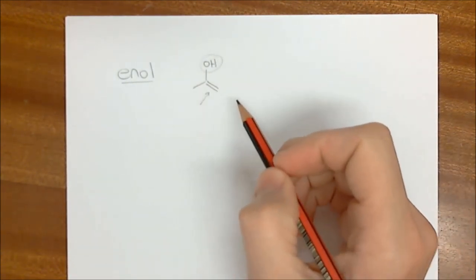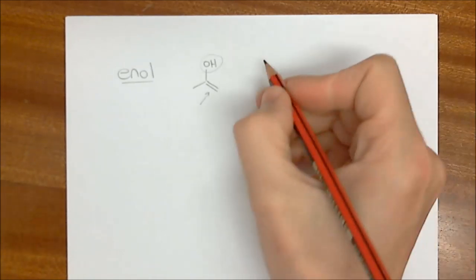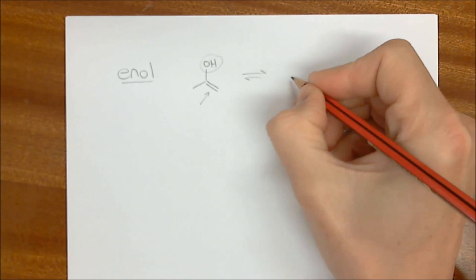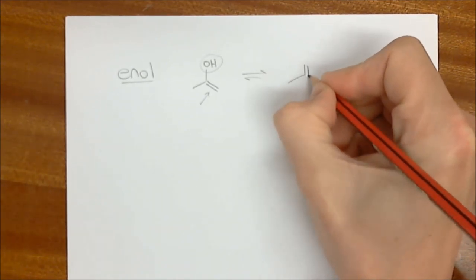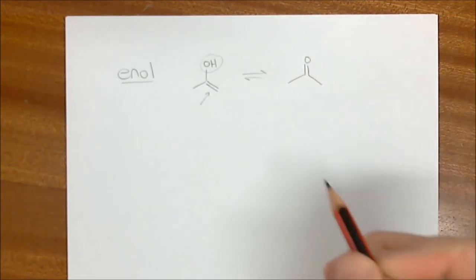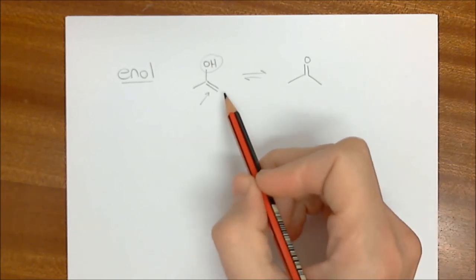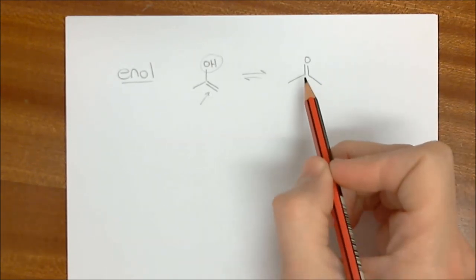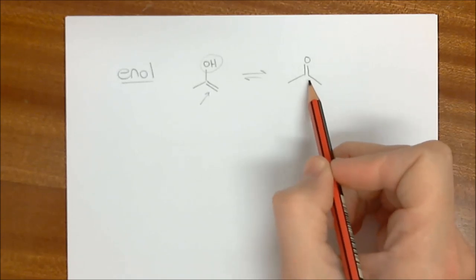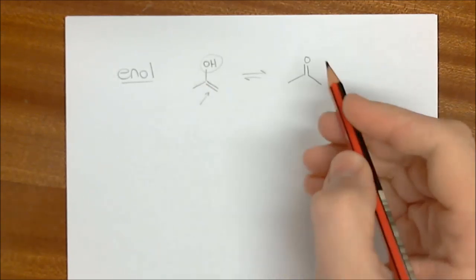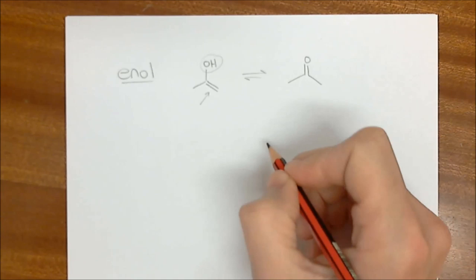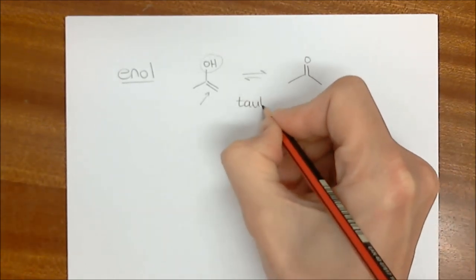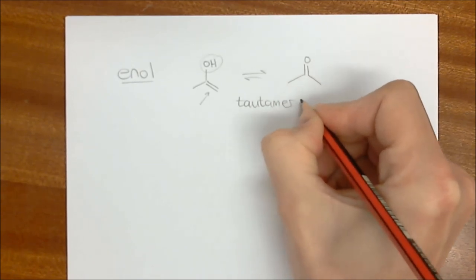Enols are actually just tautomers of ketones or aldehydes, and we're going to see how this happens. What I want you to do is go back to your textbook and have a look at how you would convert a ketone like this into an enol. I'm not going to do the mechanism with you now — I want to actually look at enolates. These are tautomers.